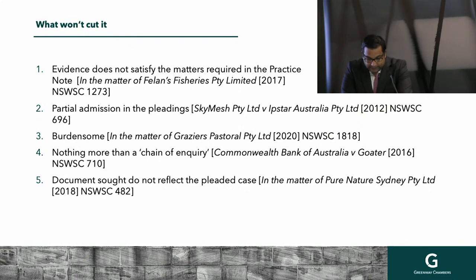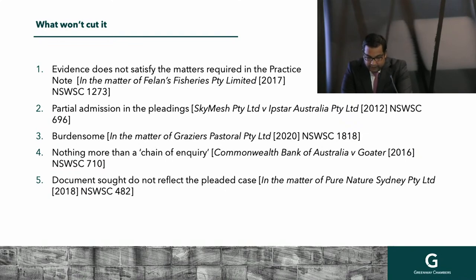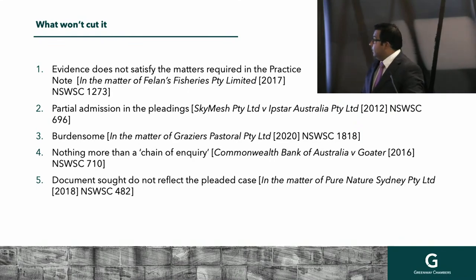The evidence in Phelan's Fisheries implicitly failed to relate the explanation to the classes of documents for which disclosure was sought. His Honour said that should have been done by reference to the pleadings, and the evidence didn't do that. His Honour declined to order discovery in those circumstances.